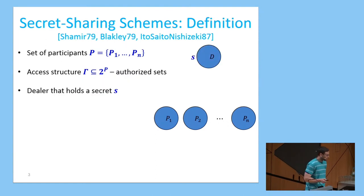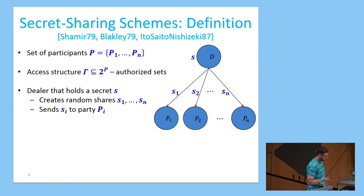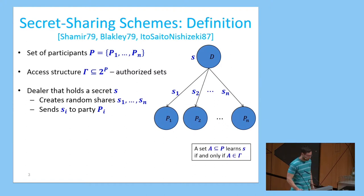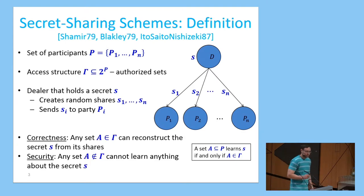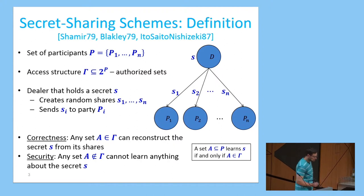The dealer holds the secret S, creates random shares S1 to SN according to the secret and the random scheme, and privately communicates each share Si to party Pi. In the secret sharing scheme, we want a set of parties to learn the secret if and only if it is in the access structure gamma. The correctness requirement is that any set in the access structure is an authorized set that can reconstruct the secret S from their shares by applying some reconstruction function. The security requirement is that any set not in the access structure should not learn any information about the secret.